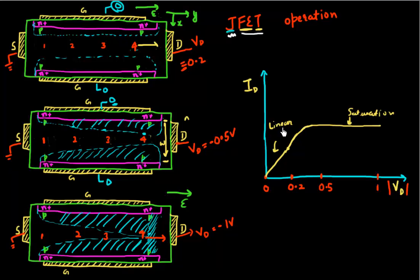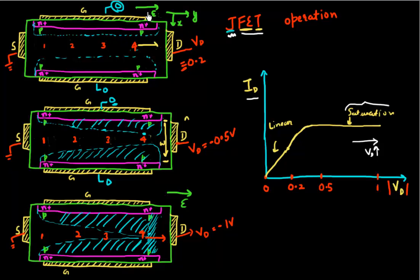But it's still a perplexing device. One question that often comes to mind is: what's happening in the saturation region? Over in this region, when I'm increasing my drain voltage, my current is remaining constant. So how is this possible? Because I'm increasing my drain voltage.